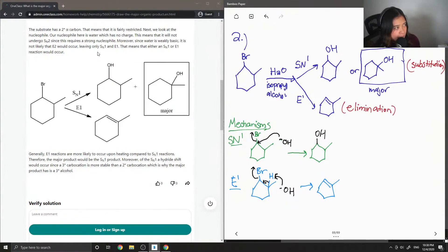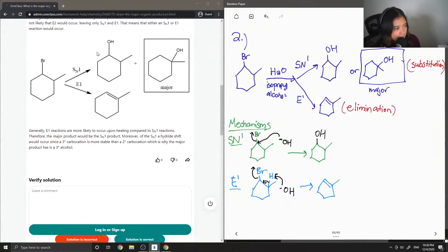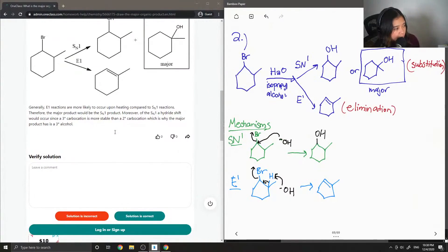That means that either an SN1 or E1 reaction would occur. Okay, so they have the same products drawn out. Generally, E1 reactions are more likely to occur upon heating compared to SN1. Therefore, the major product would be the SN1.